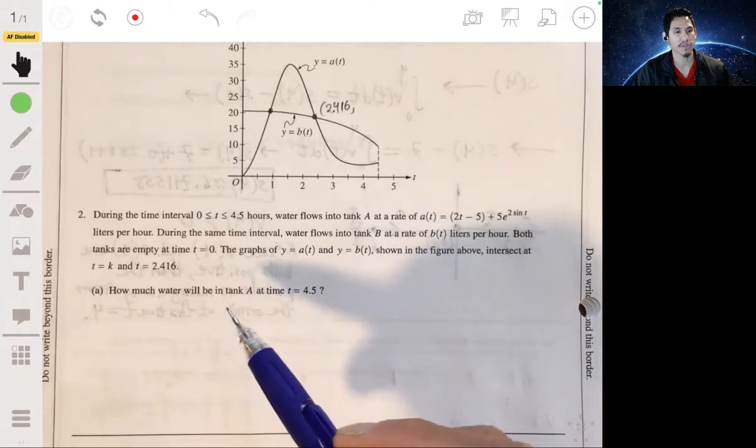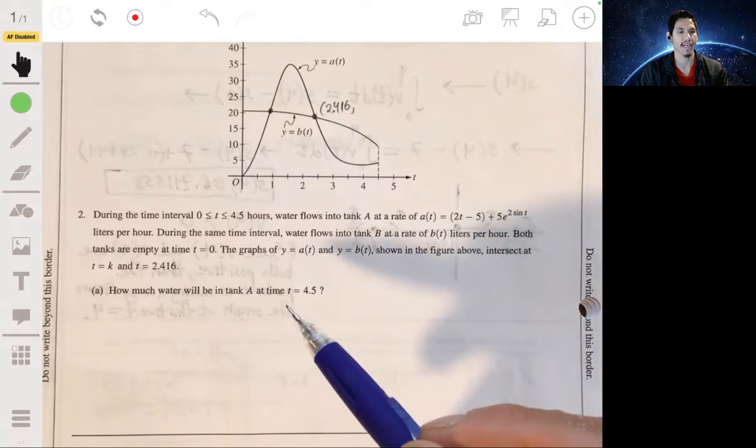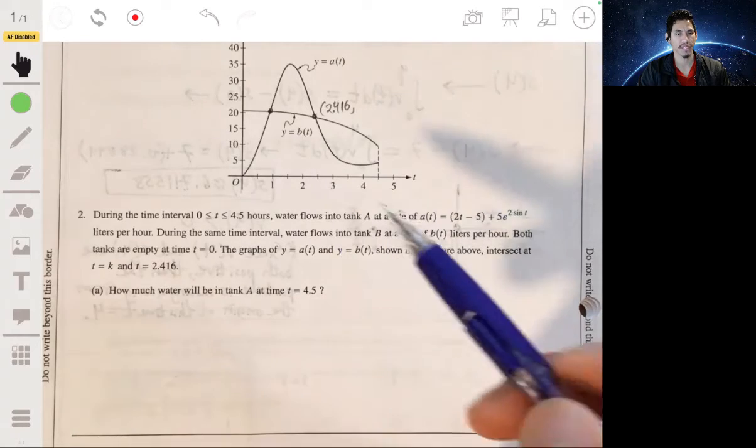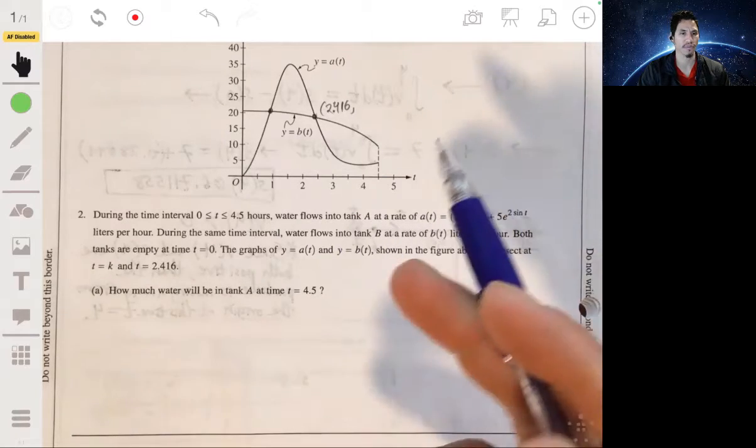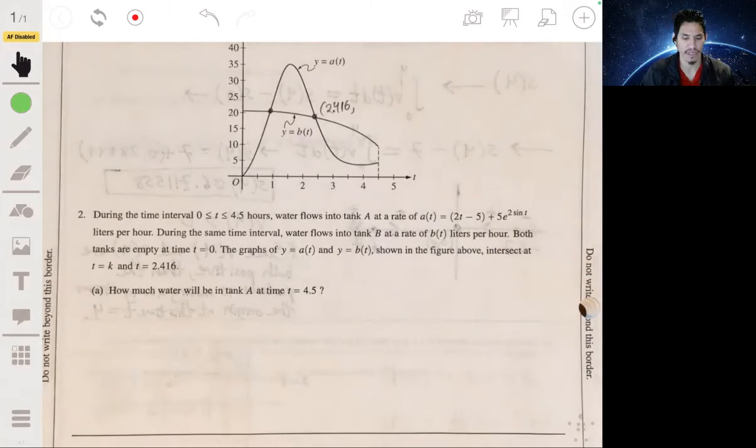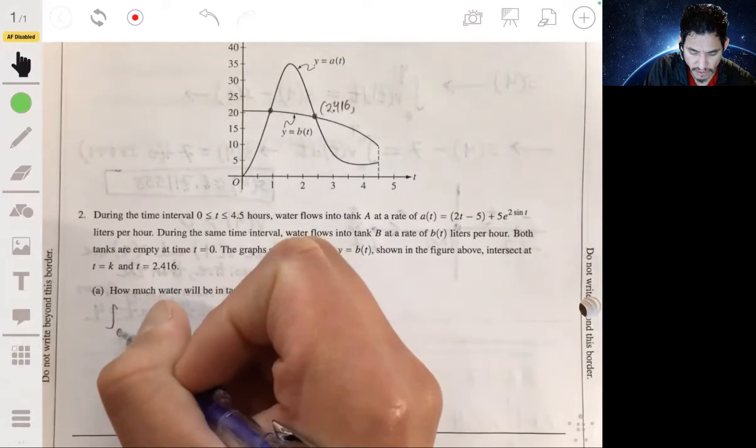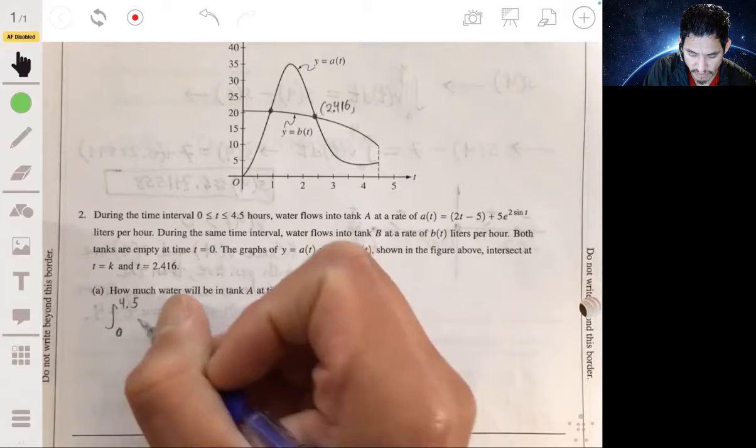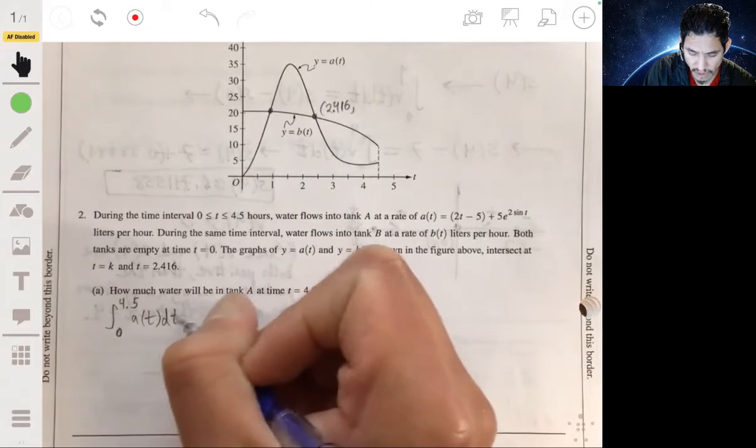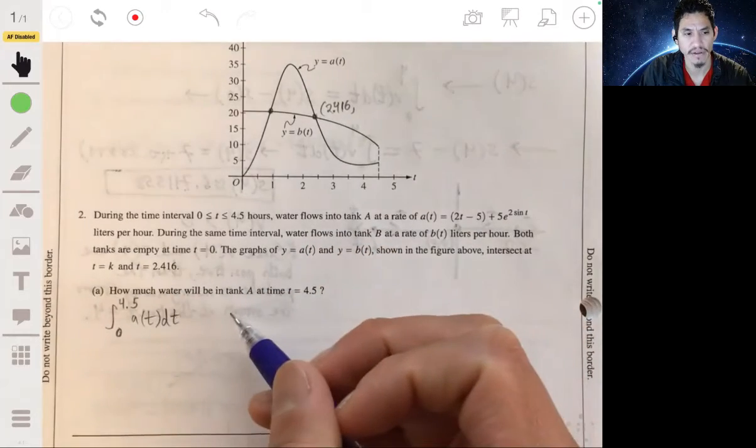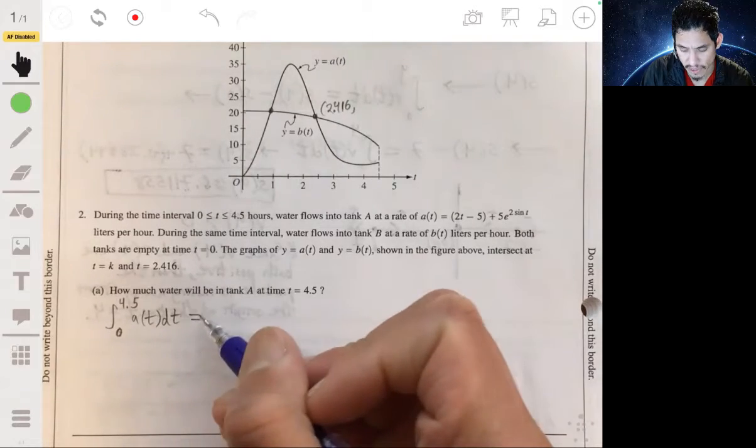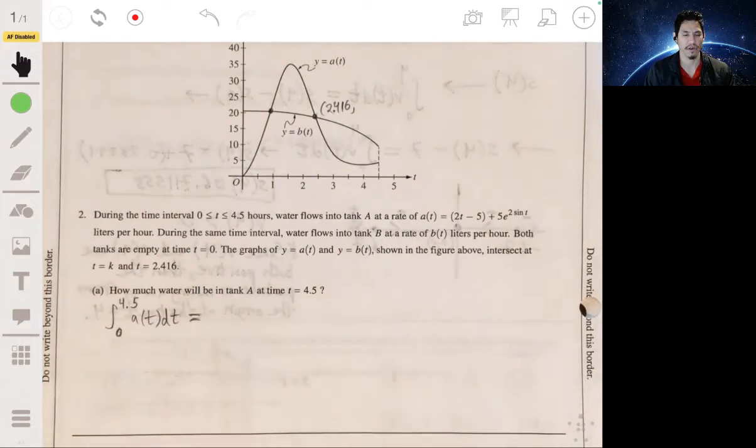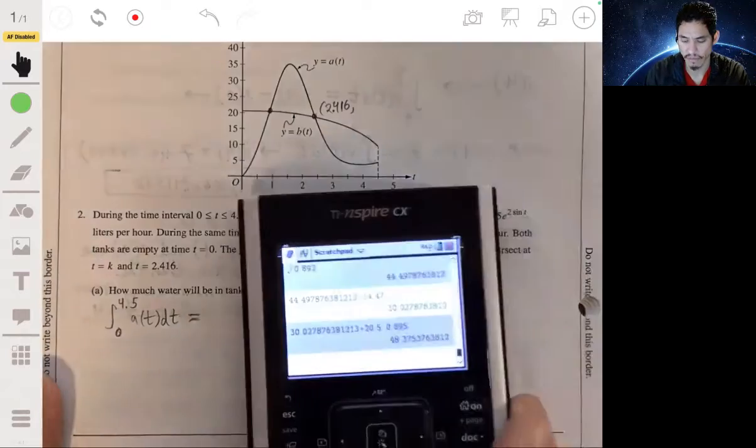Part A: how much water will be in tank A at the time T equals 4.5? Okay, so since this function A of T tells you the rate at which the water is flowing, you simply need to integrate the rate from 0 to 4.5 to get the total amount of water in tank A. So this is simply equal to some amount, and you can find this with your calculator because this is a calculator allowed problem.